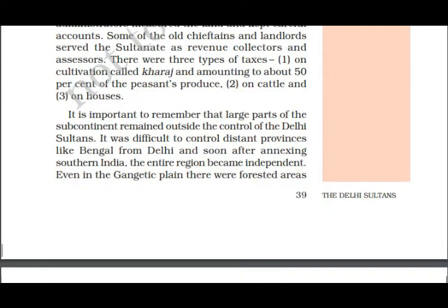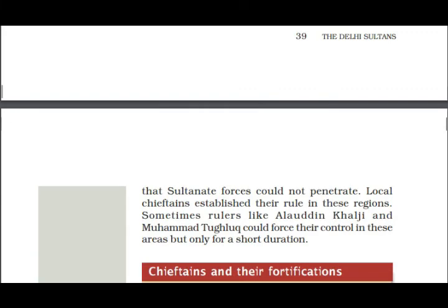It is important to remember that large parts of the subcontinent remained outside the control of the Delhi Sultans. It was difficult to control distant provinces like Bengal from Delhi, and soon after annexing Southern India, the entire region became independent. Even in the Gangetic plains, forest areas that Sultanate forces could not penetrate were ruled by local chieftains. Rulers like Alauddin Khalji and Muhammad Tughlaq could sometimes force control in these areas, but only for a short duration.